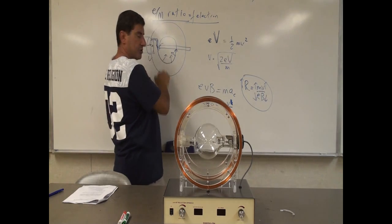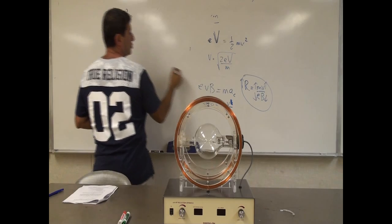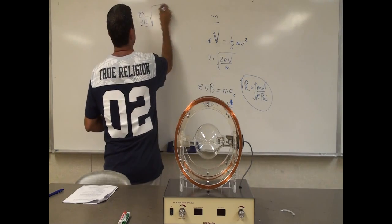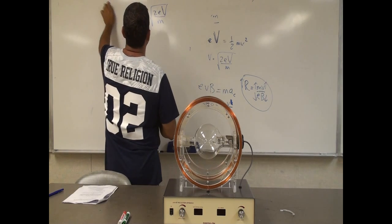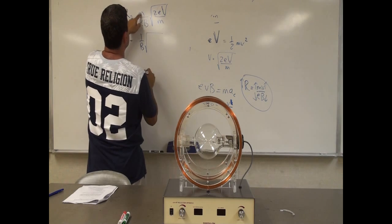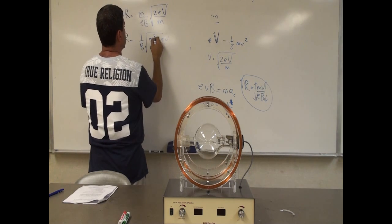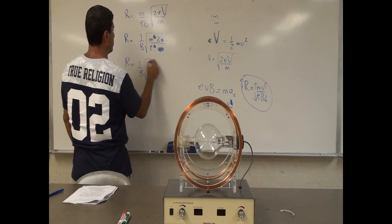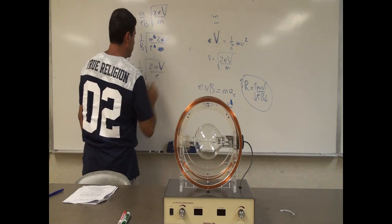I can combine the radius equation with the equation for the outgoing velocity of the electron. The velocity is v = √(2eV/m). Substituting into r = mv/(eB) and simplifying by taking m and e into the radical gives: r = (1/B) × √(2mV/e). Here V is the accelerating voltage.